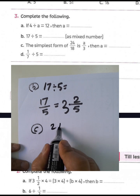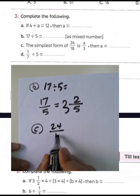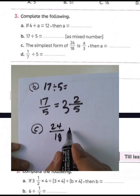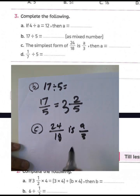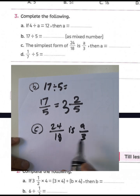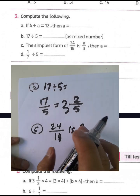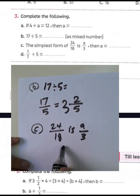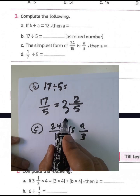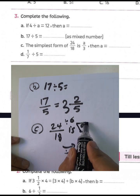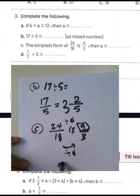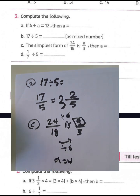Letter C: find the simplest form of twenty-four over eighteen. Set it equal to e over three. Multiply six by three to get eighteen, and six by four to get twenty-four. So twenty-four divided by six equals four and eighteen divided by six equals three, giving e equals four.